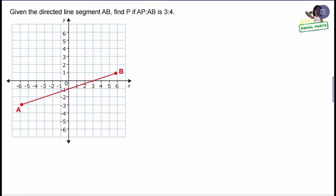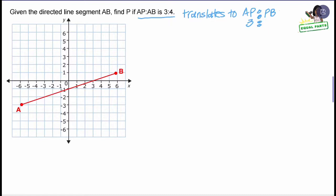Now let's get into what an actual problem would look like. The problem says: given the directed line segment AB, find P if AP to AB is three to four. When they say directed line segment, they're telling you where to start and where to end — we start at point A and end at point B. From A to P there are three parts, but from A to B there are four parts. So we need to translate this ratio into AP to PB, and instead of three to four, we say three to one, because from P to B there is actually one part. That gives us four equal parts for this line segment.